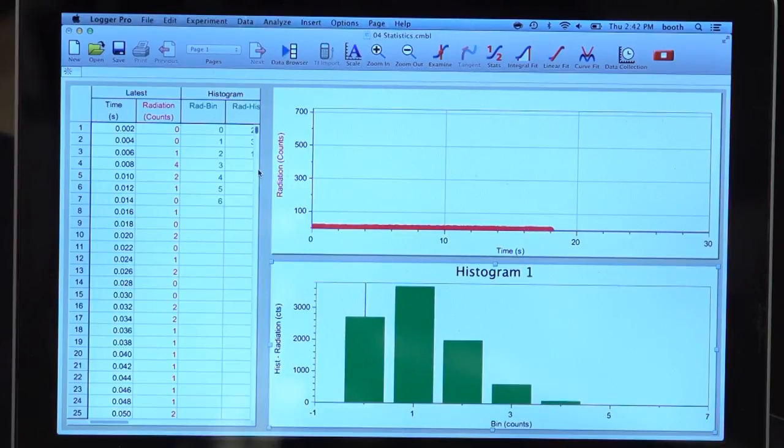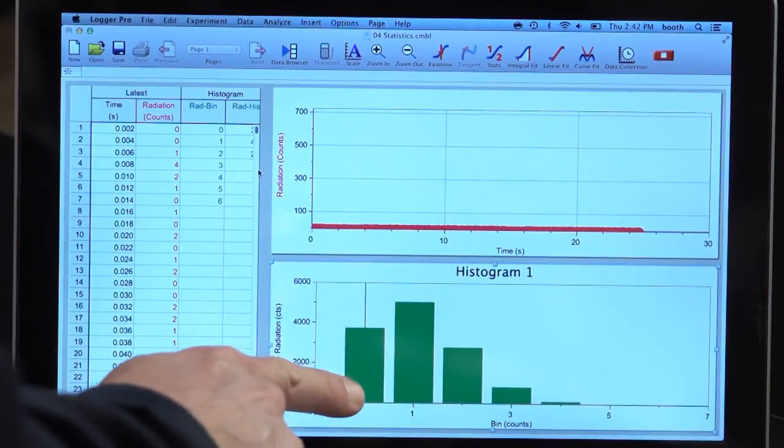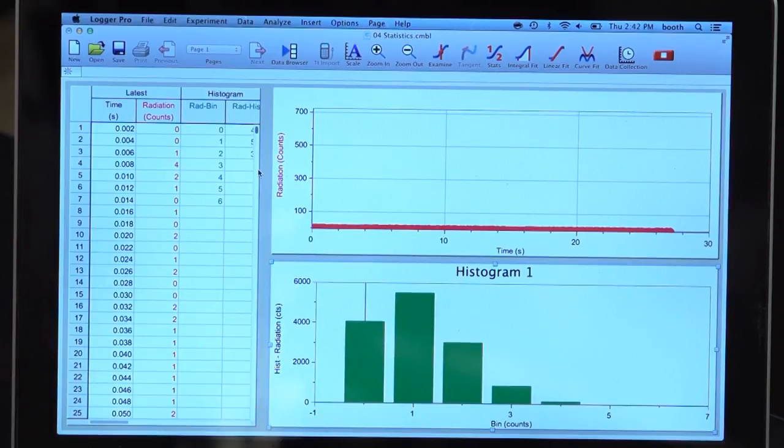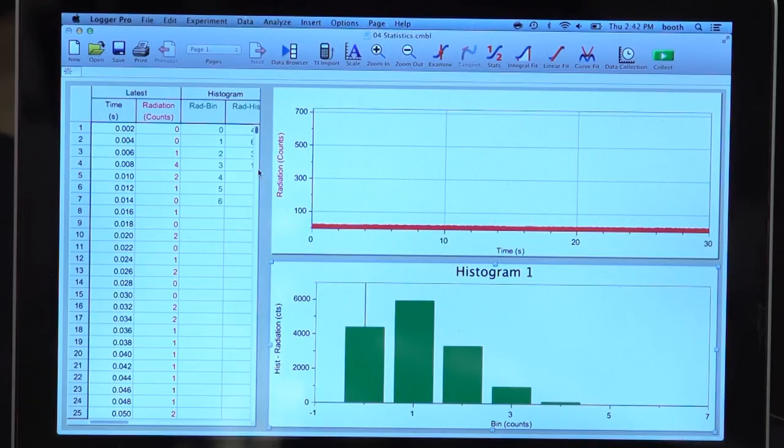The lower graph is a histogram of those counts per time interval. And you can see in the left-hand bar is the zero count bar. That shows that, some of the time, there are no counts at all during a time interval. The most common result is to have one count during a time interval. I end up with a distribution that is asymmetric. This is a Poisson distribution.